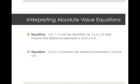Interpreting absolute value equations: when your equation reads absolute value of X equals K, it can be rewritten as absolute value of X minus zero equals K, meaning the distance between X and zero is K. For the equation absolute value of X minus B equals K, this means the distance between X and B is K units.